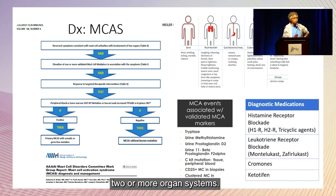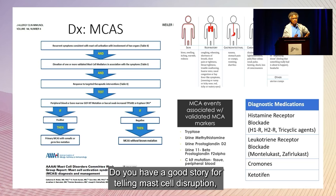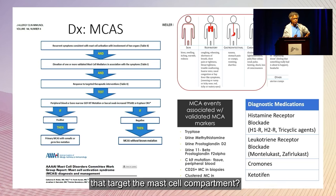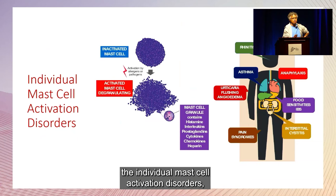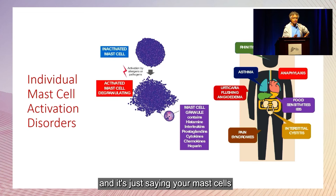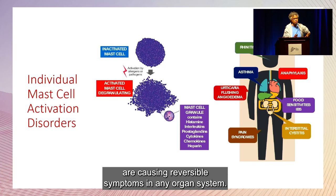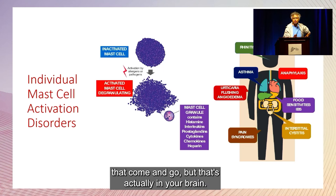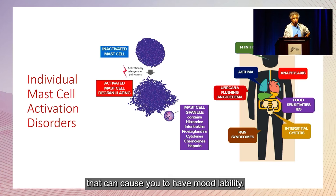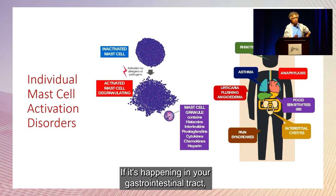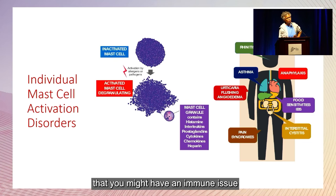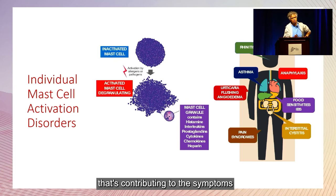It's important to identify two or more organ systems, have a good story for mast cell disruption, and determine if you get better with medications targeting the mast cell compartment. Mast cell activation disorders cause reversible symptoms in any organ system. If you're having hives that come and go in your brain, that can cause brain fog or mood lability. In the gastrointestinal tract, bloating can come and go. In your joints, swelling or pain that comes and goes. Think about whether an immune issue is contributing to your symptoms.